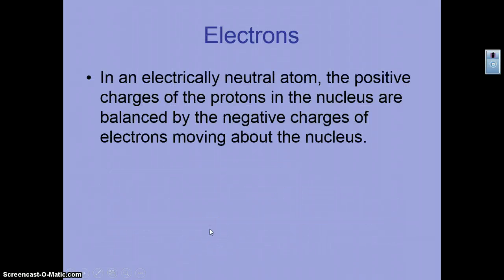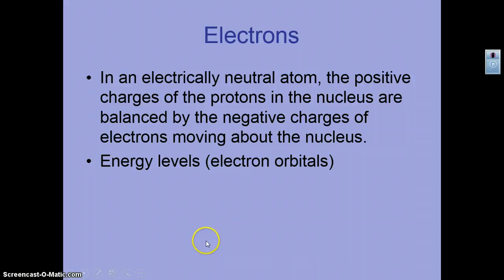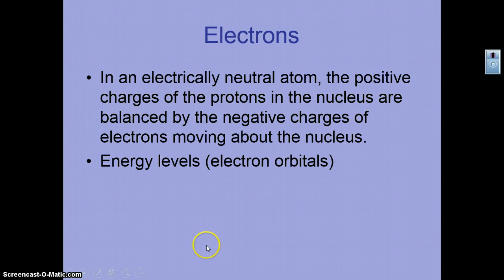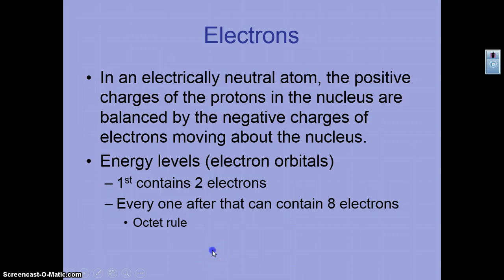Electrons are what react in a chemical reaction. In an electrically neutral atom, the positive charges of the protons in the nucleus are balanced by the negative charges of the electrons outside. We know from chemistry that electrons are not in concentric circles but in orbitals that are probability clouds. The first orbital contains two electrons, and every shell after that contains eight, because atoms are much more comfortable with eight in their outer shell.